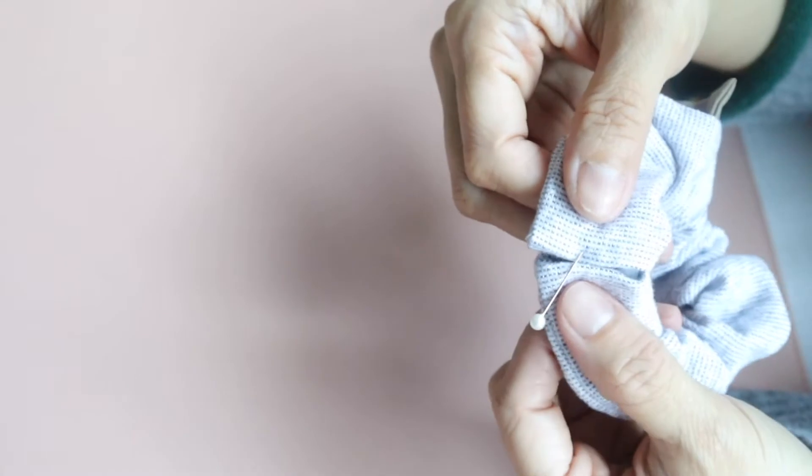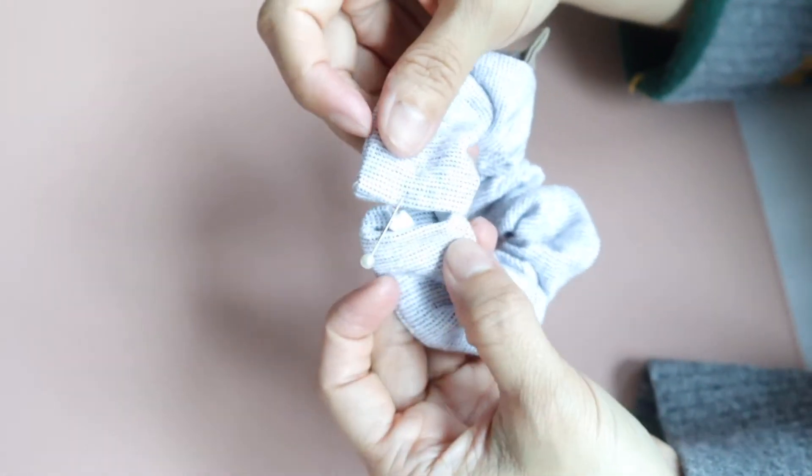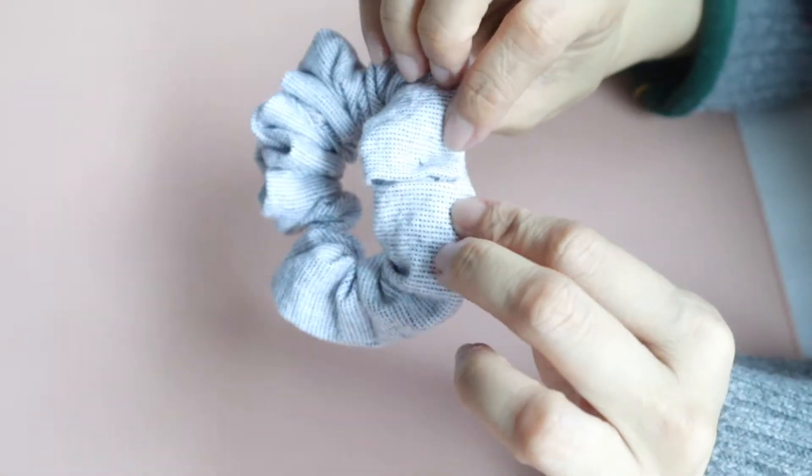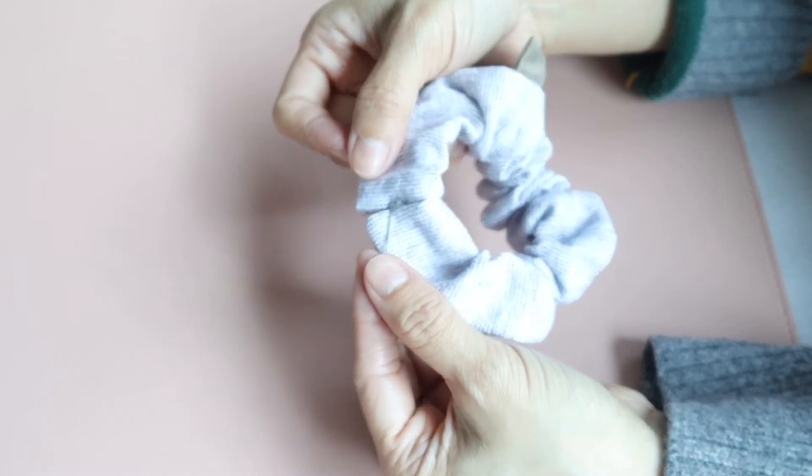Connect and sew the sides of the fabric together to finish the project. You can add some beads, tassels, or other things to decorate your scrunchie. Again, it's all up to you.